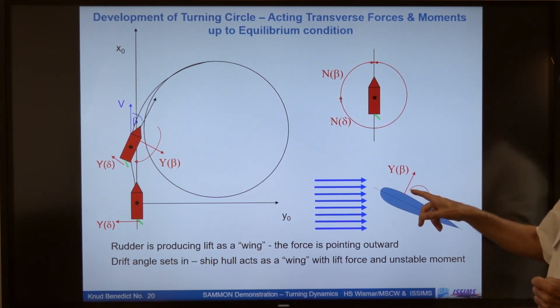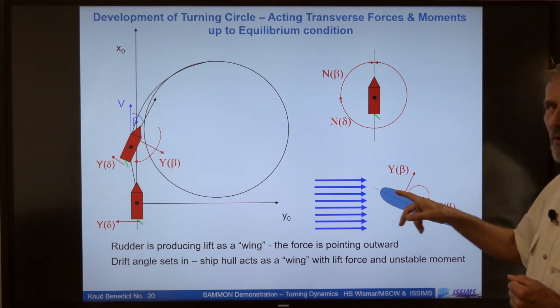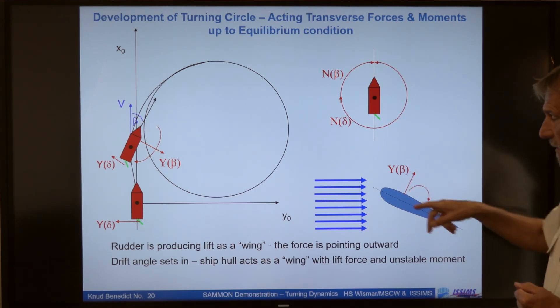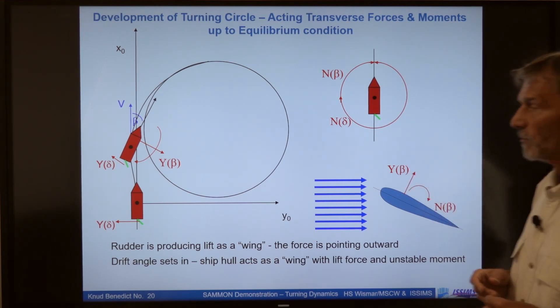Because this force is, the working point of this force is to the bow or leading edge. There's also a moment, which we call the unstable moment.